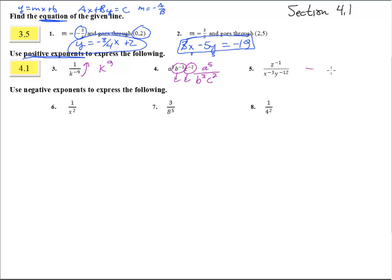Number 5: this term is going to go down to the bottom, so we're going to have z to the first down there, which is just z. Then this term is going to go up to the top — that's x to the third — and that term is also going to go up to the top because it has a negative exponent: y to the twelfth.